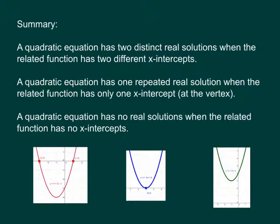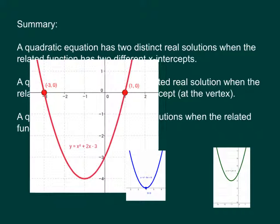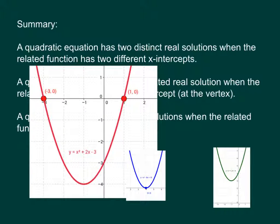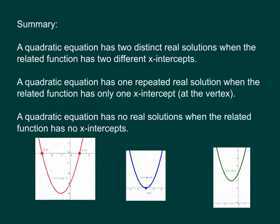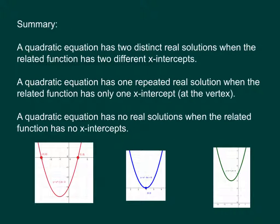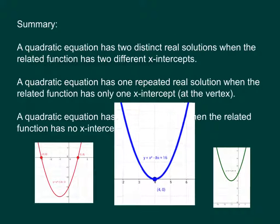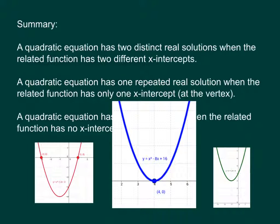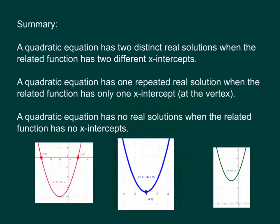If the related function has two different x-intercepts, like this example here, then the quadratic equation is going to have those two solutions at the x-intercept x values. If the quadratic equation has one x-intercept, which happens to be actually at its vertex, which would be in this case 4, 0, x equals 4, then it's only going to have one repeated real solution. So that's a different case there.